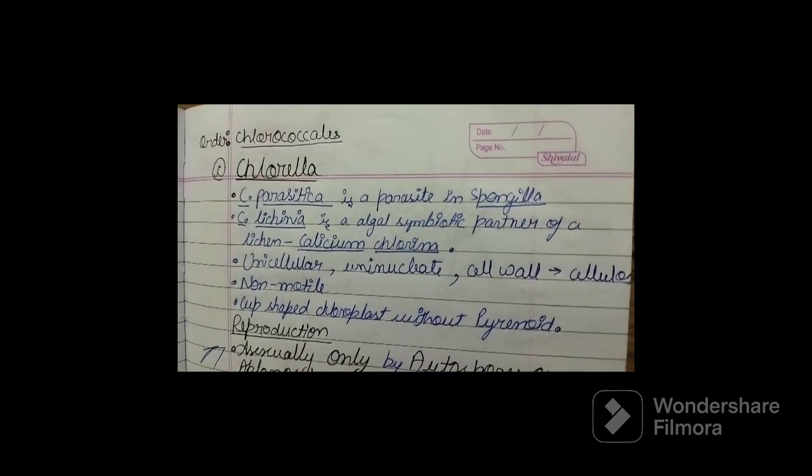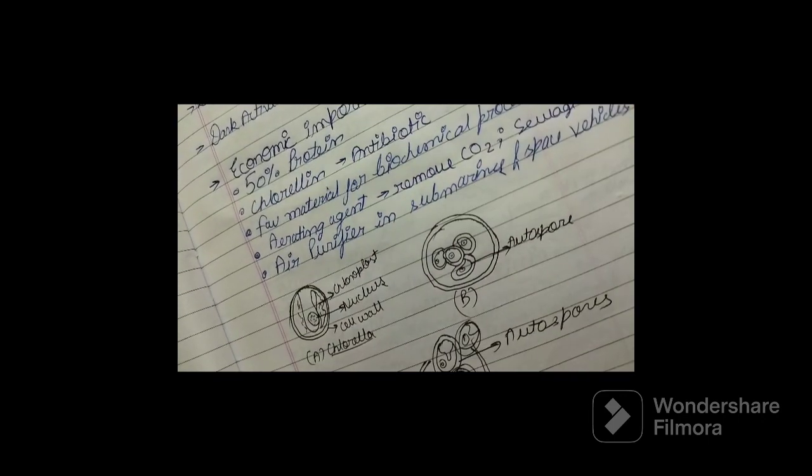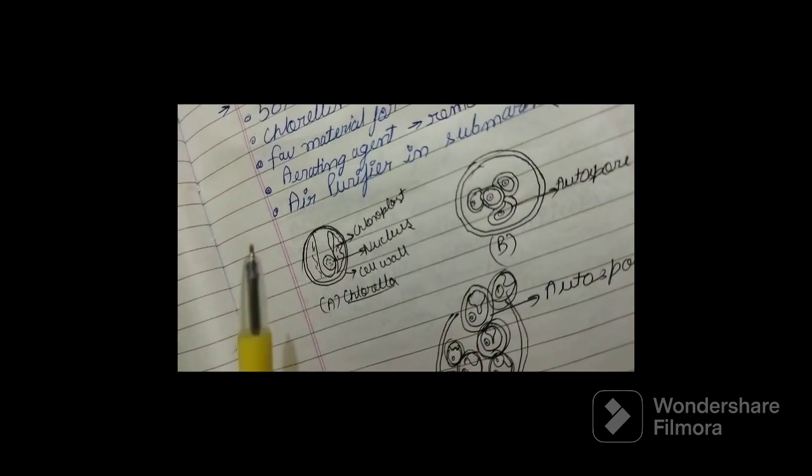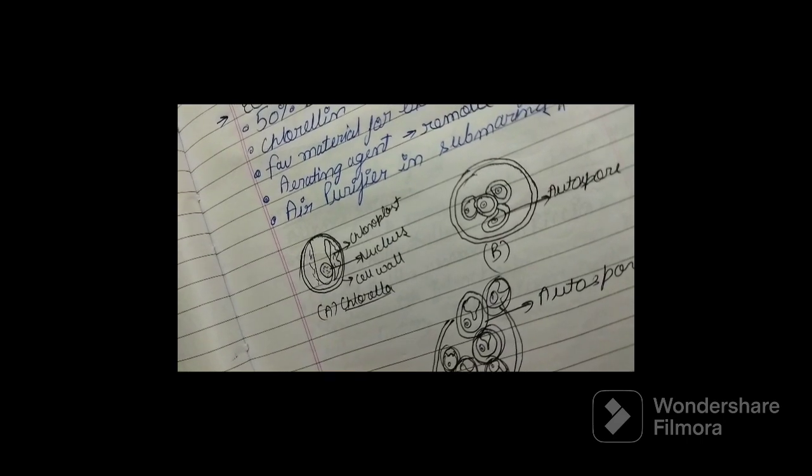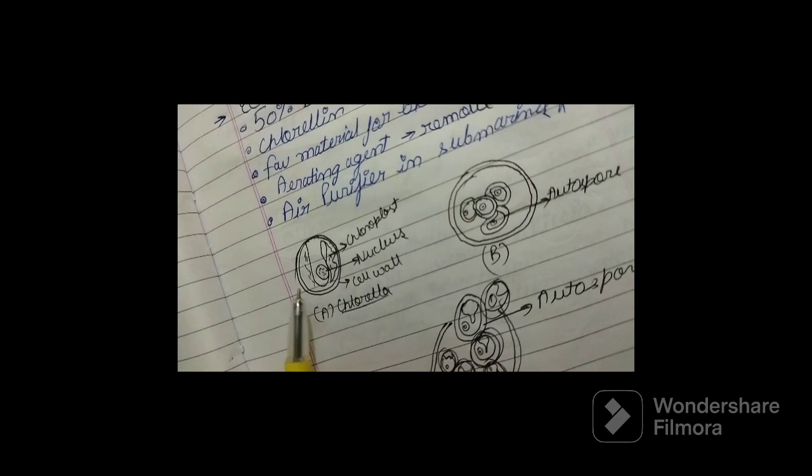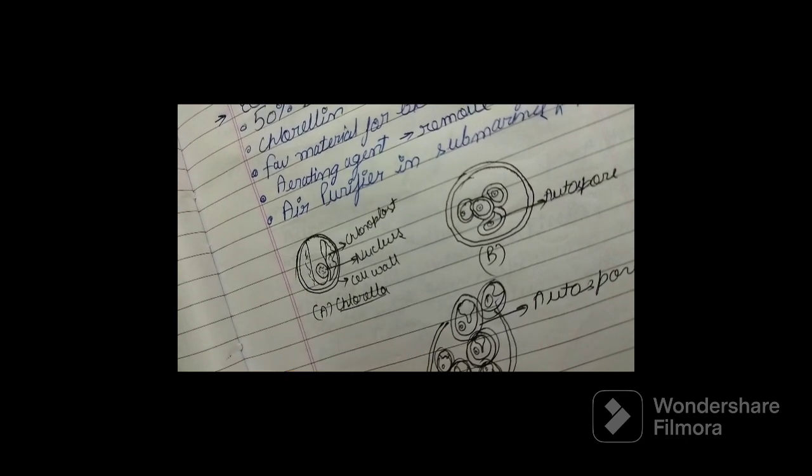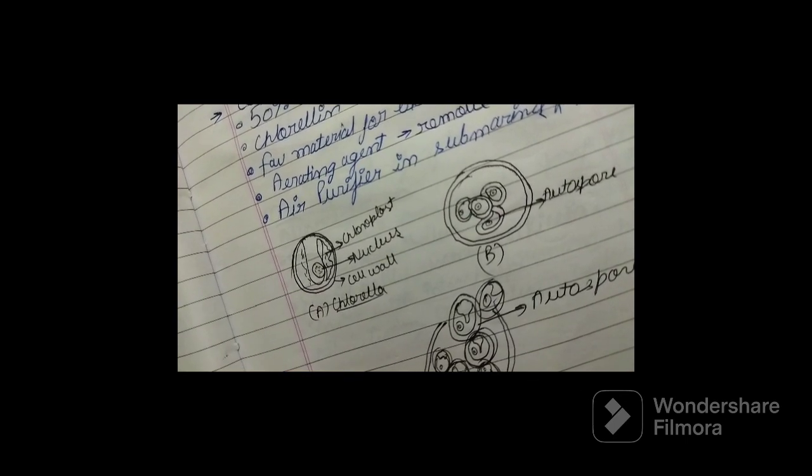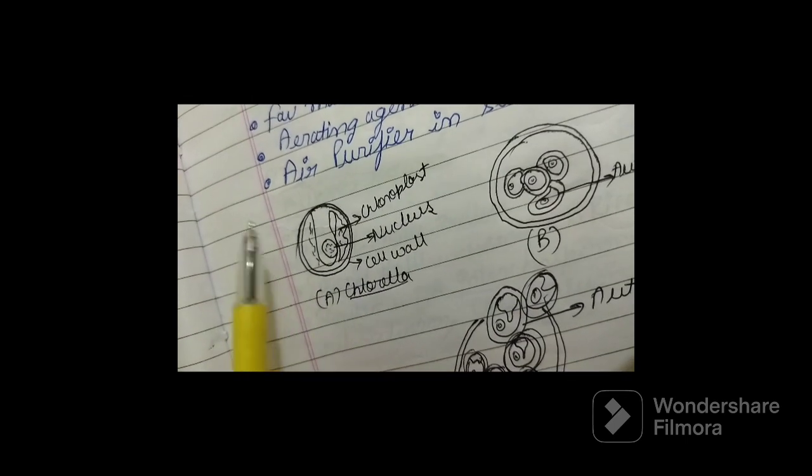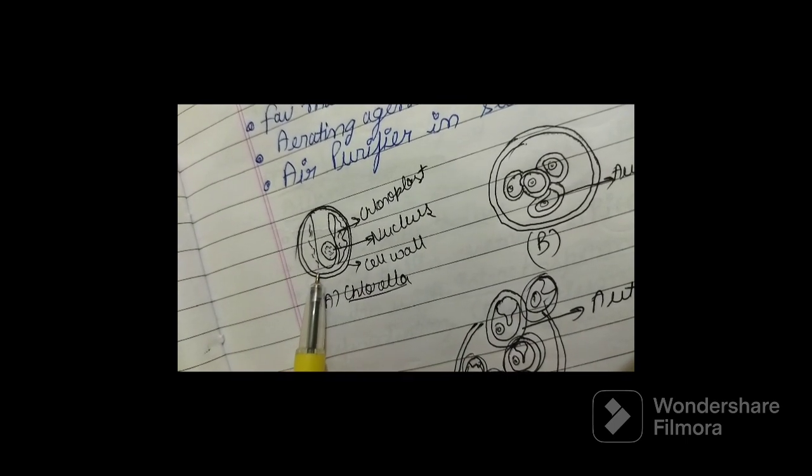Now talking about the shape of the cell, you can see here this is how the cells look like. It is spherical to broadly ellipsoidal in shape. You can see that the chloroplast occupies the major part of the cell. This complete area is your chloroplast.